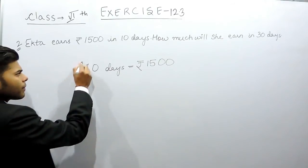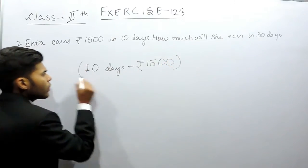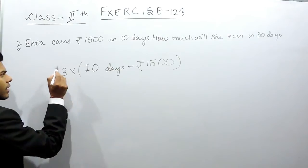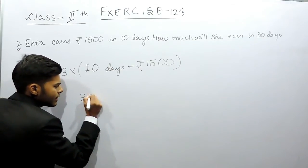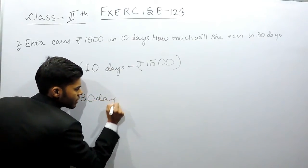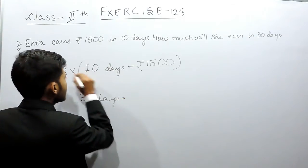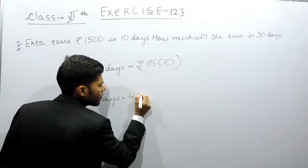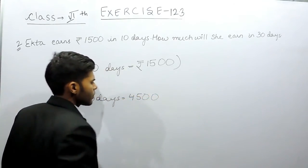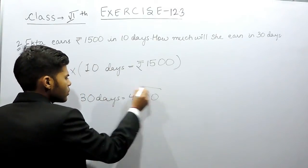If we multiply this whole equation by 3, that will give us that in 30 days she will earn 1500 into 3, which is 4500 rupees. This is the first method to solve this question.